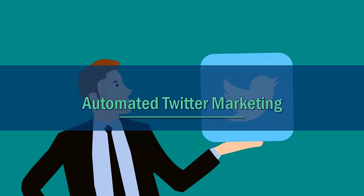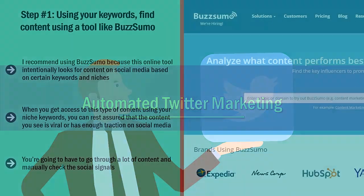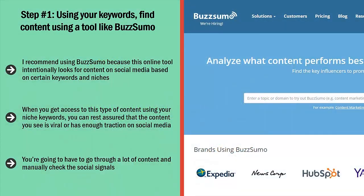Automated Twitter Marketing: follow the step-by-step directions below to set up your own automated Twitter marketing campaign. Step number one — using your keywords, find content using a tool like BuzzSumo.